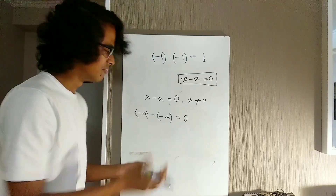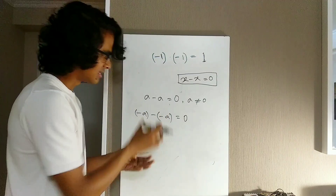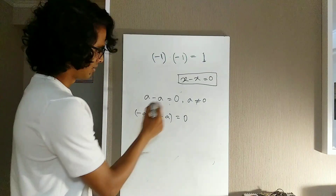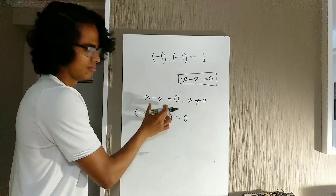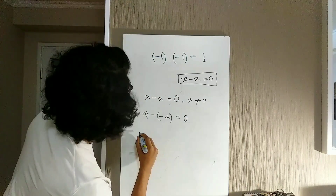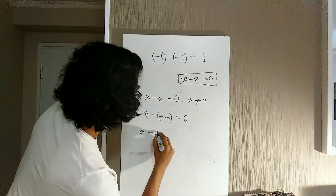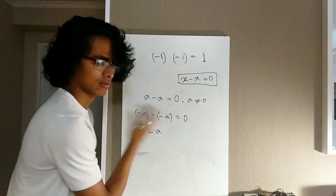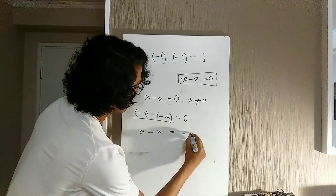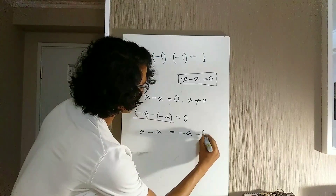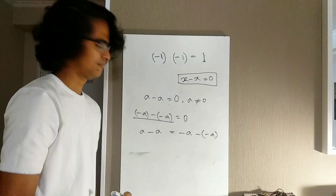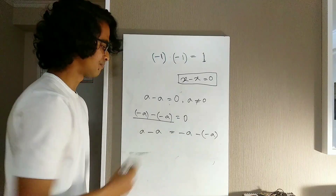So what does it mean if both of them are 0? It means they have to be equal. Because both equal 0, we can write: a minus a equals minus a minus minus a. So we have this new equation.